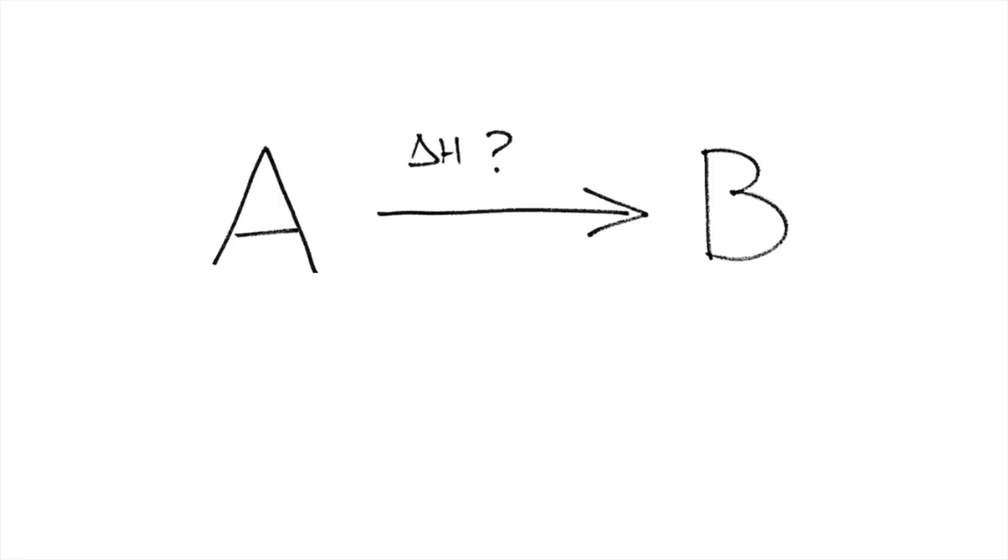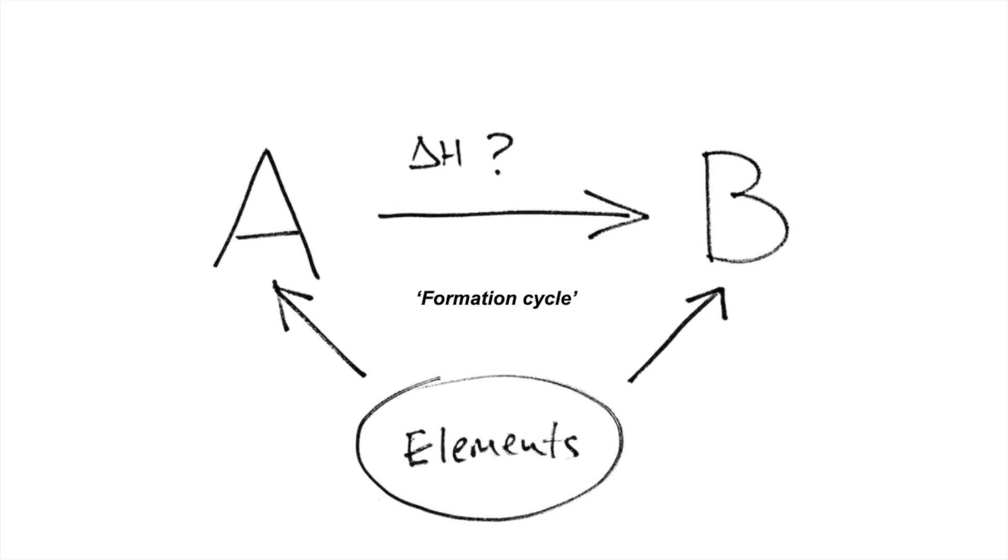I'm going to use enthalpy changes of formation to do that, so we construct what I call a formation cycle. If you think about the definition for enthalpy change of formation, it's the enthalpy change for the formation of one mole of a compound from its constituent elements. That's why I've got an element box in the bottom of the cycle there.